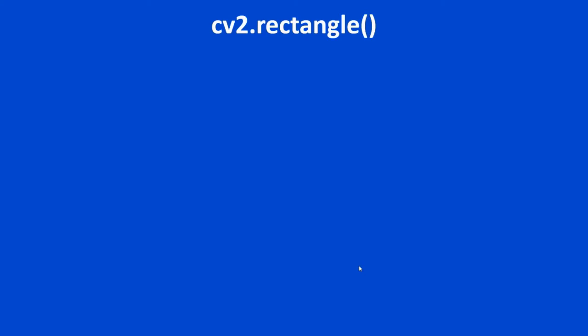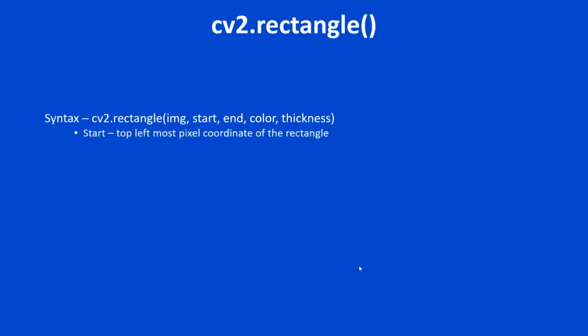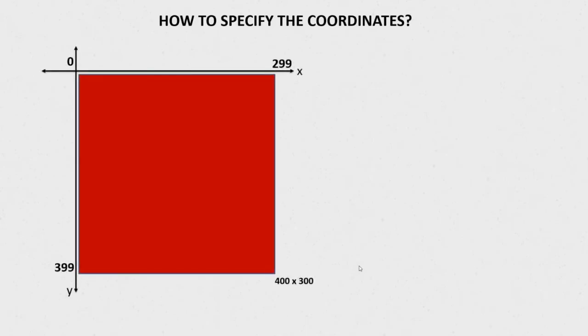Now let's look into cv2.rectangle. The syntax is similar to cv2.line: cv2.rectangle(image, start, end, color, thickness). The only change is in the start and end parameters. The start parameter is the top-leftmost pixel coordinate of the rectangle, and the end parameter is the bottom-rightmost pixel coordinate of the rectangle.